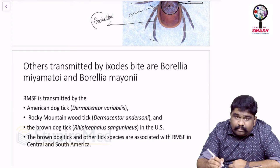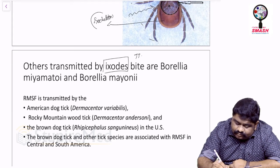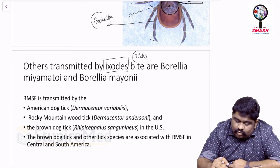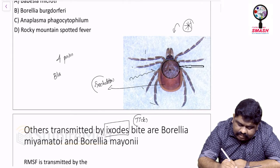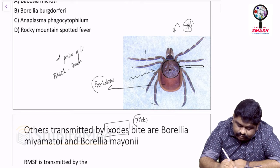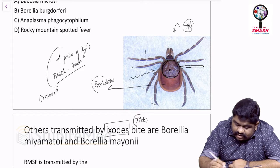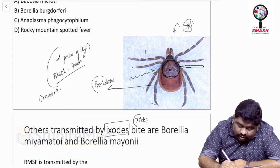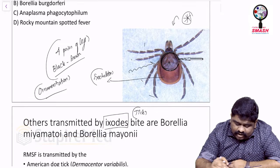This particular bug has to be Ixodes. Remember: it has four pairs of legs, the legs can be black to brown in color, and you can expect ornamentation on the surface of the vector. What you are seeing here is ornamentation on the surface of Ixodes.